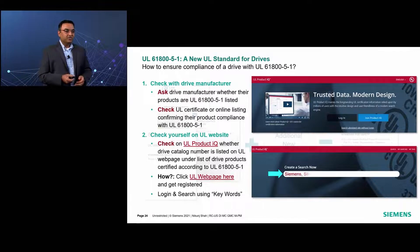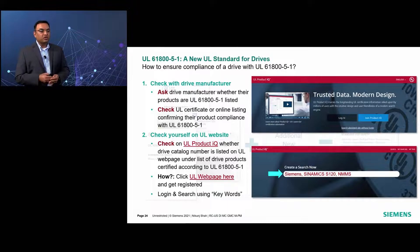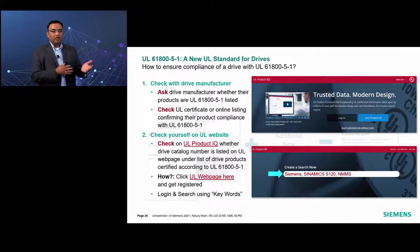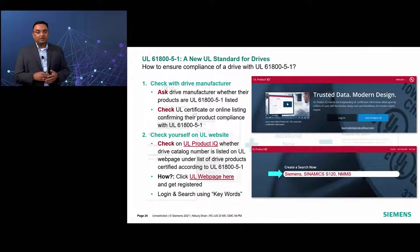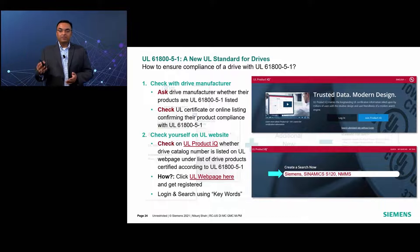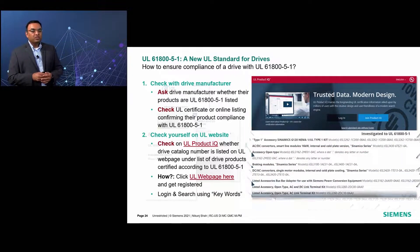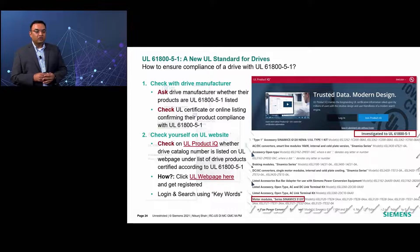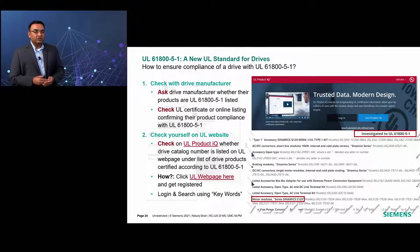You can search using a drive manufacturer's name such as Siemens, or drive model numbers such as Sinamics S120. You can also use the drive listing category control number provided by UL, which is NMMS. Once you do the search, the results page will show — in this case for the Sinamics S120 motor module or inverter — that it is investigated to UL 61800-5-1, confirming whether the drive product is certified to this new standard.